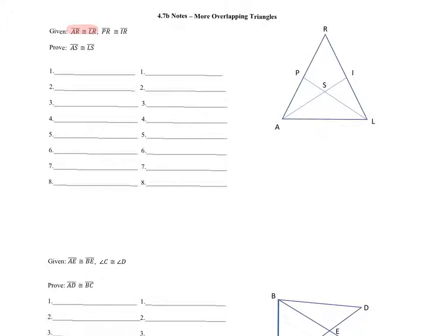LRP — this triangle. So we're going to draw triangle LRP because we know we have information from it. This would be P, this would be R, this would be L.